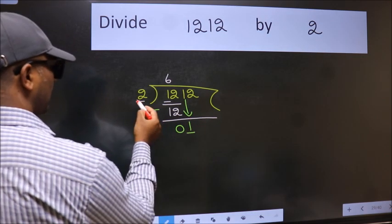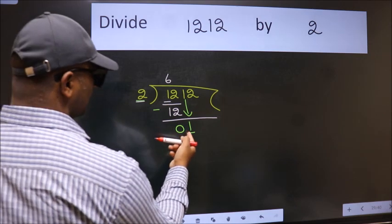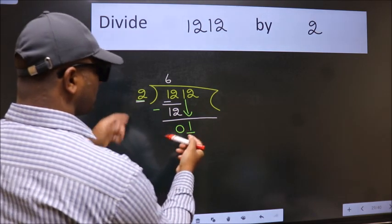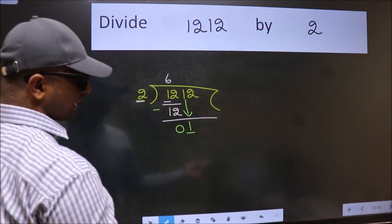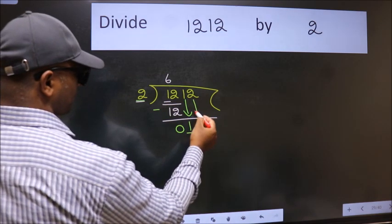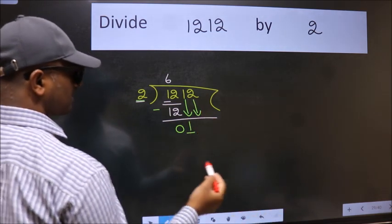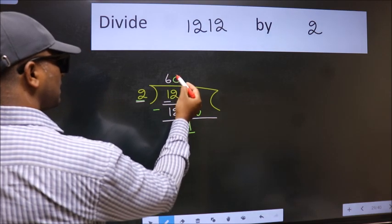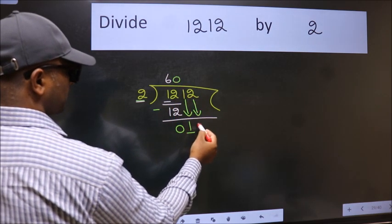Now here we have 1 and here 2. 1 is smaller than 2, so we should bring down the second number. And the rule to bring down the second number is put 0 here. Then only we can bring this number down.